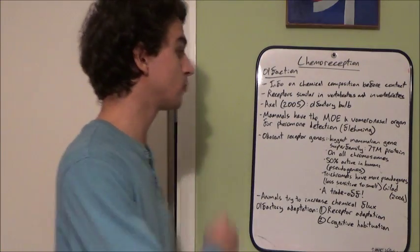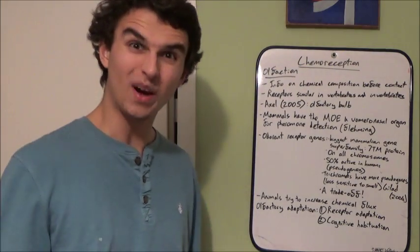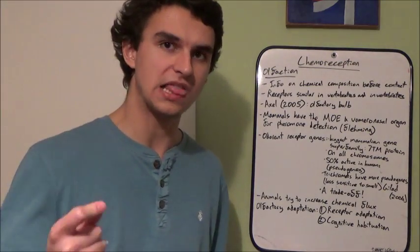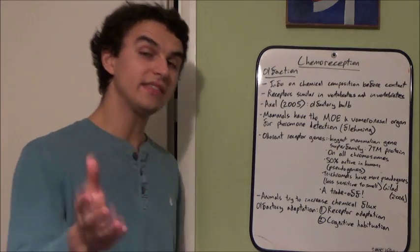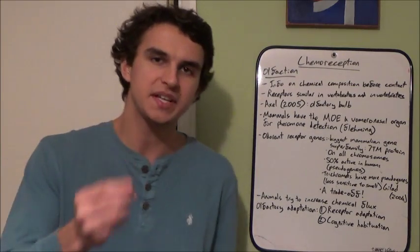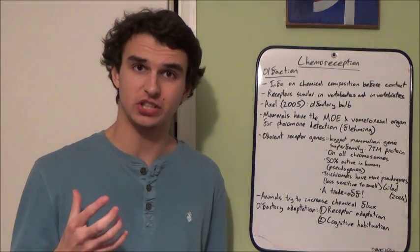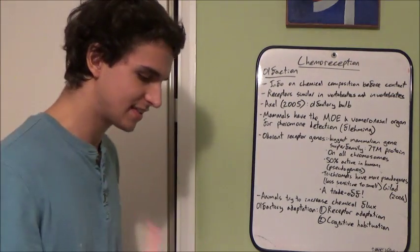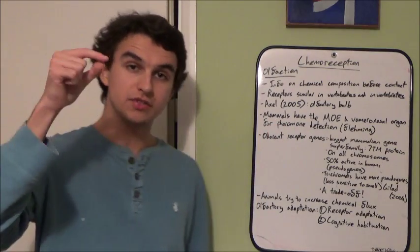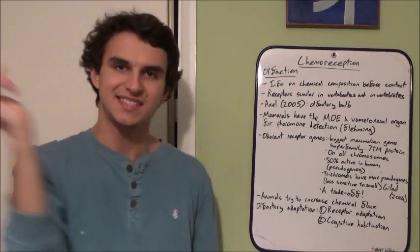Interestingly, if you look at the olfactory receptors of invertebrates and vertebrates, they're actually quite similar — suggesting they evolved a long, long time ago. Unlike taste receptors, these are primary receptors with their own axons, meaning they can send off action potentials. Insects have a cuticle, but the receptors are still fluid-filled; in the cuticle there are little pores which allow scent molecules floating in the air to enter.